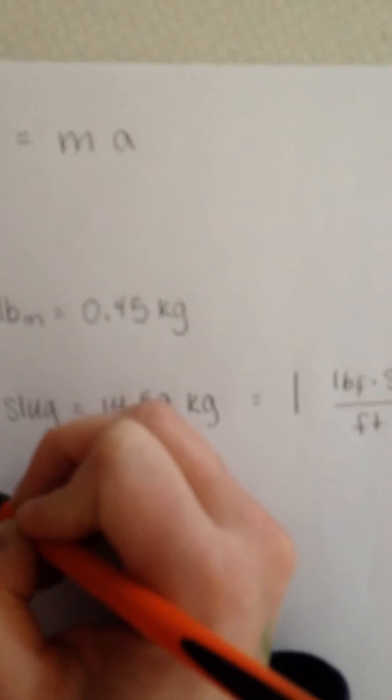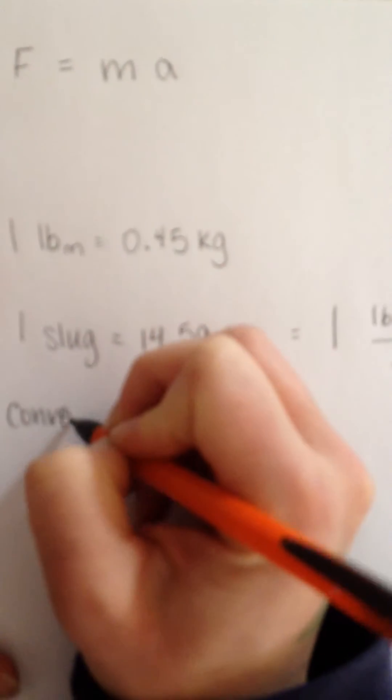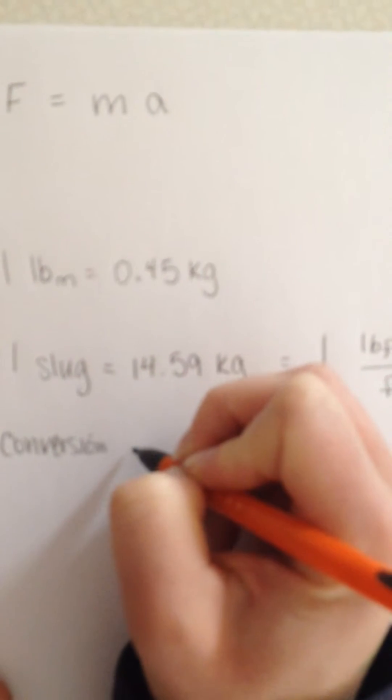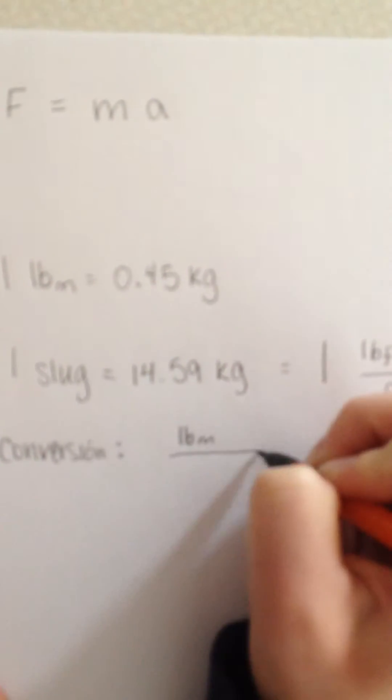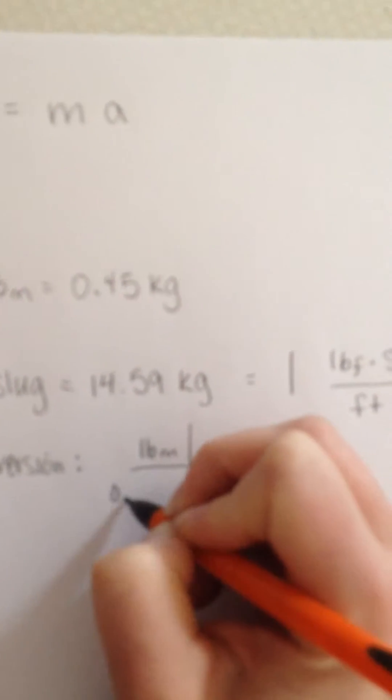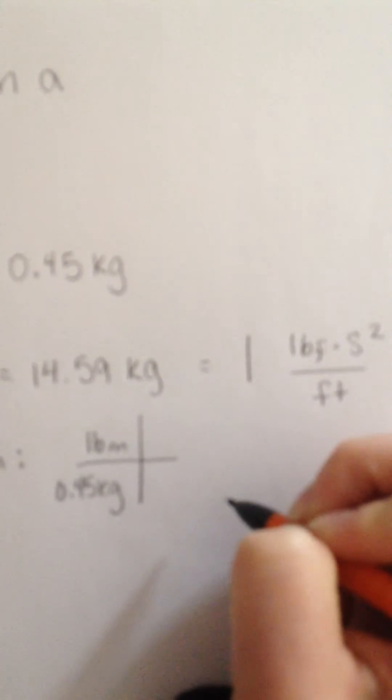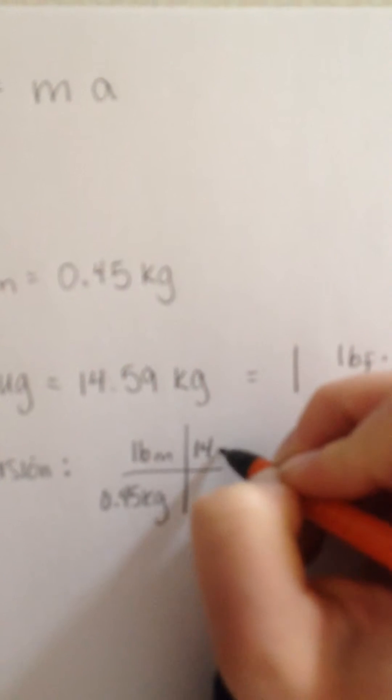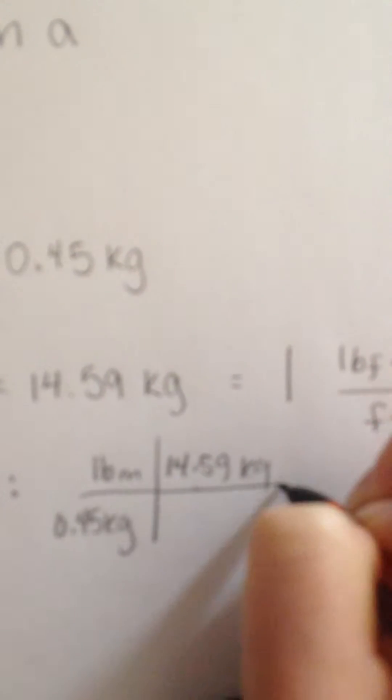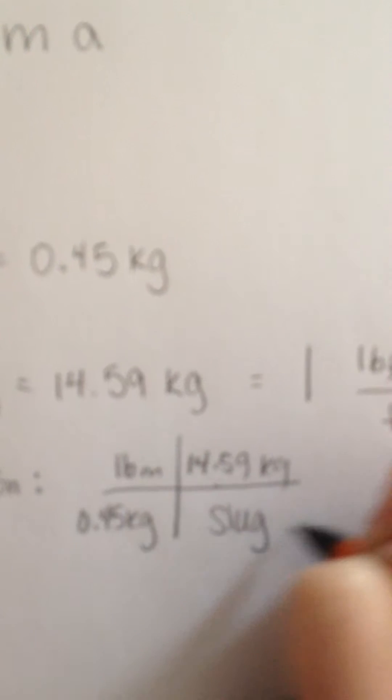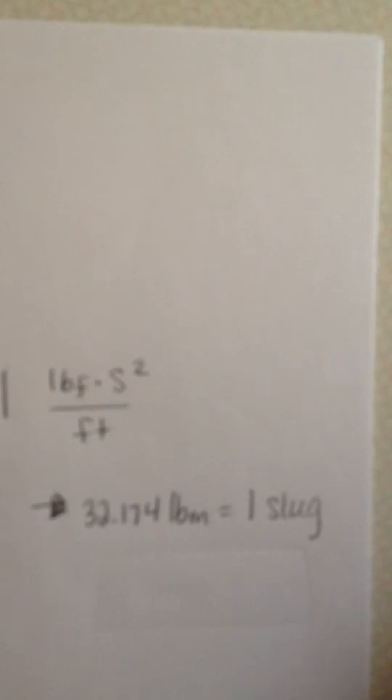When we do a conversion between these two units, we have one pound mass per 0.45 kilograms and 14.59 kilograms per slug. When you multiply that out, you get about 32.174 pound mass equals one slug. So a slug is about 32 pounds, which is equivalent to about two cases of beer.